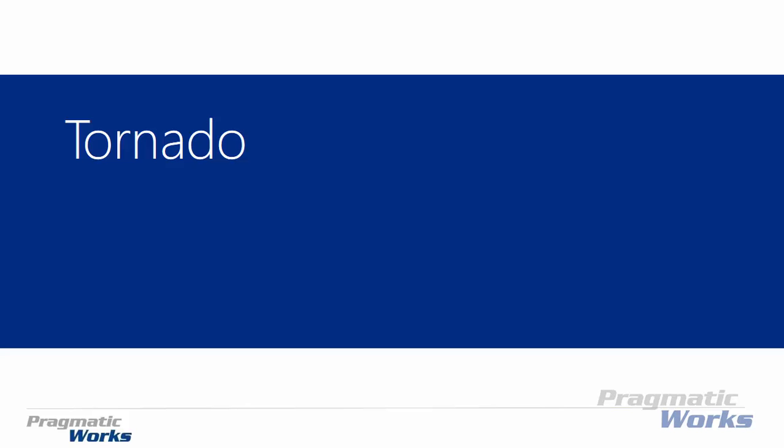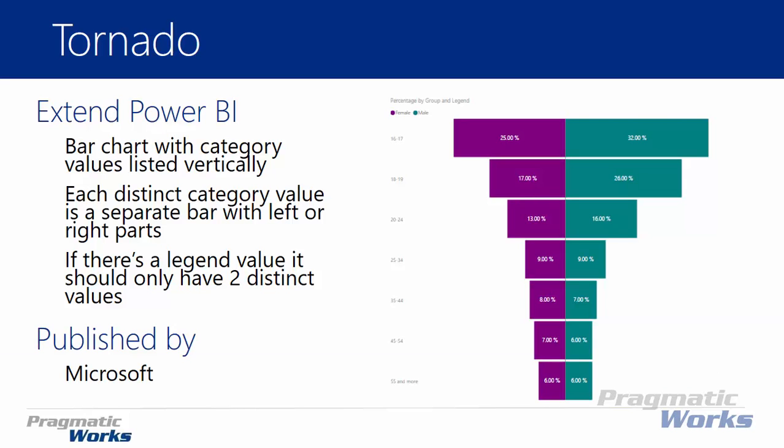Hi, welcome back to our Power BI Custom Visuals course. In today's session we're going to be looking at the Tornado Chart. The Tornado Chart was developed by Microsoft, and basically the idea of the Tornado Chart is it gives you the ability to look at a bunch of categorical data, showing on almost like a bar chart that lists the categorical values vertically.